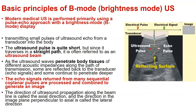Let's talk about basic principles of B mode or brightness mode ultrasound. Modern medical ultrasound is performed primarily using a pulse echo approach with a brightness mode display. The ultrasound pulses given by the probe are quite short and traverse a straight path, often referred to as the ultrasound beam, which penetrates the body tissues. The echo signals returned from many sequential coplanar pulses are processed and combined to generate the image.